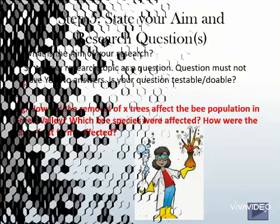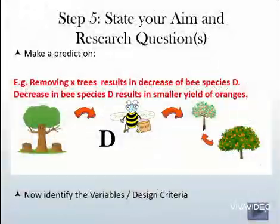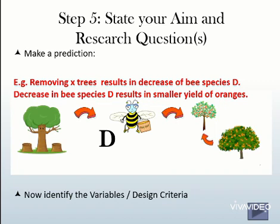Before we can finish, we need to make a prediction based on our research question. Then, all that's left to do is identify your variables — namely the dependent, independent, control, and fixed variables — which will be covered in a later tutorial. Additionally, you should decide on your design criteria.